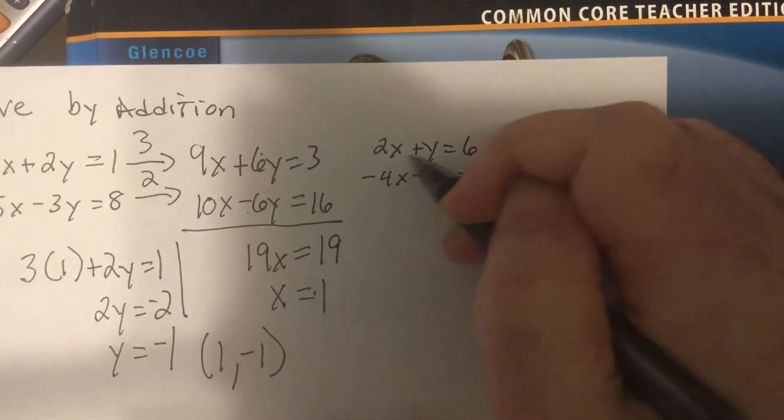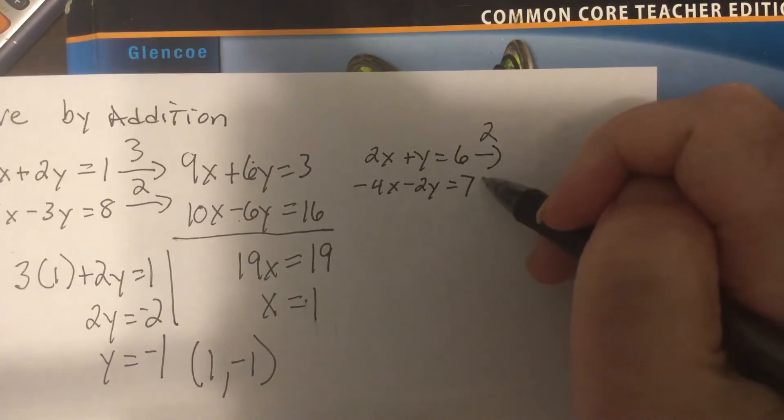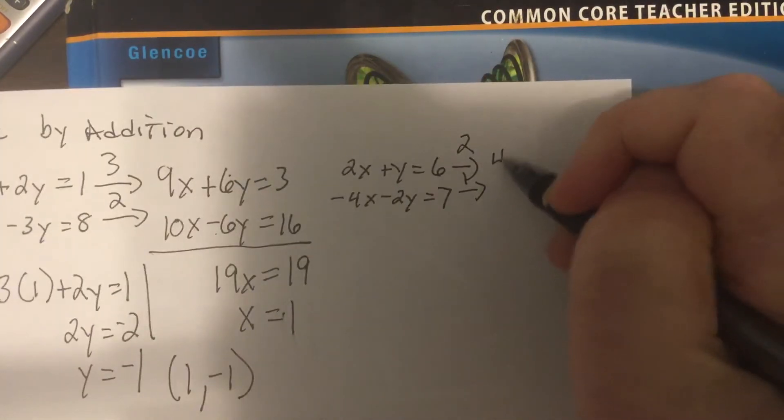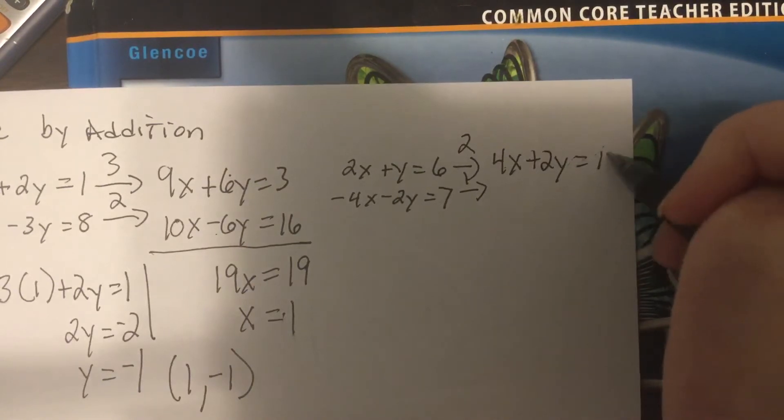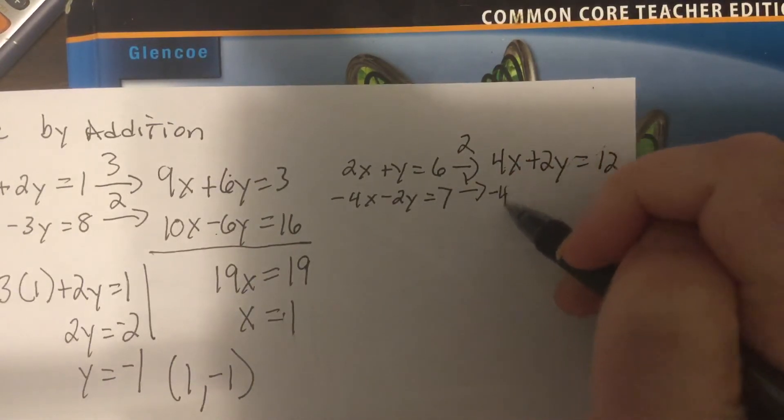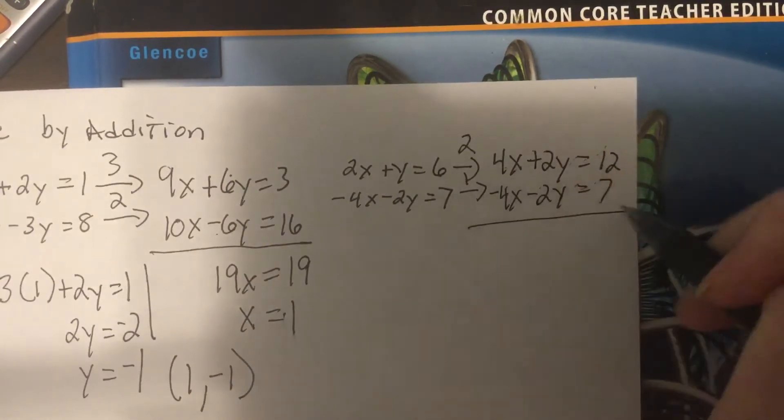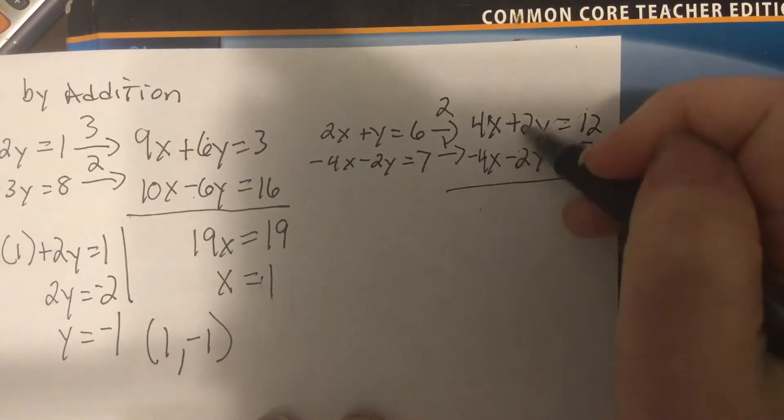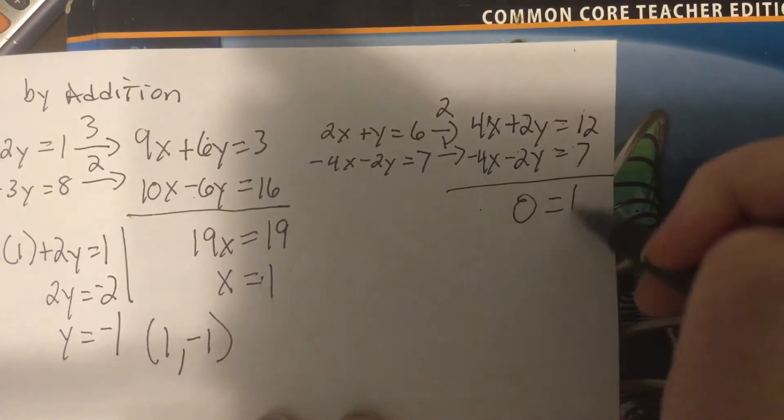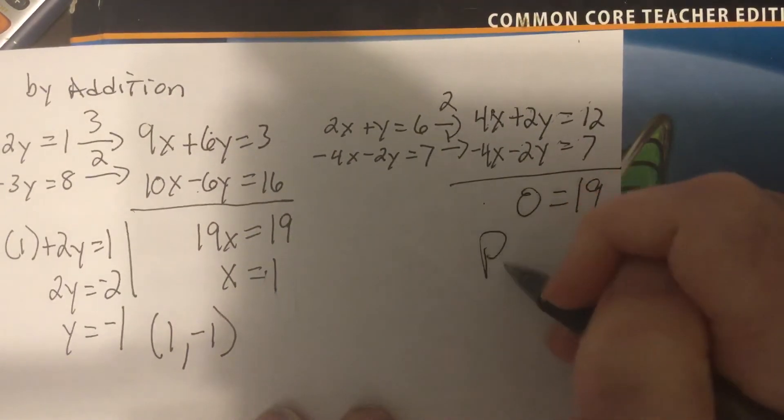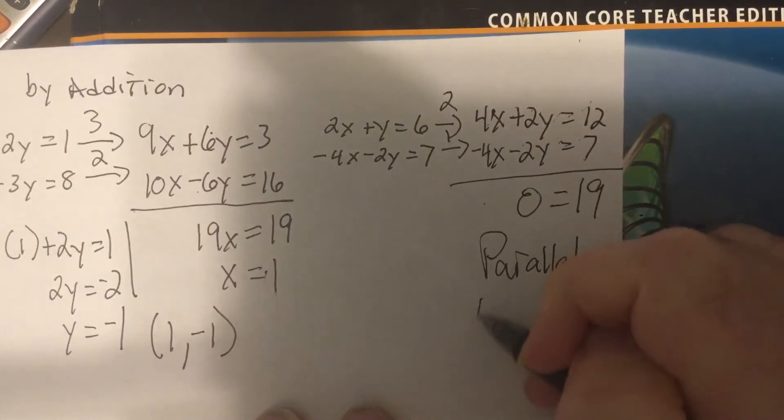This one I'm going to multiply the first equation by 2. The second one I don't need to. So I'd have 4x plus 2y equals 12, and minus 4x minus 2y equals 7. Notice the x terms drop out, but the y terms also drop out. So it's 0 equals 19. So it would be parallel lines. No solution.